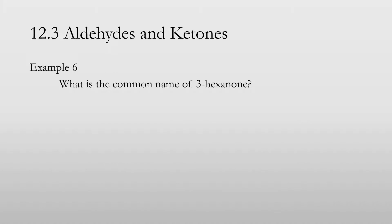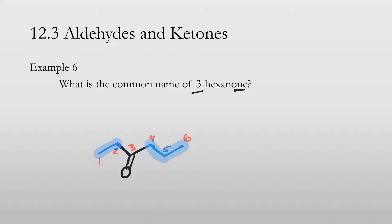Example 6 asks for the common name of 3-hexanone. Drawing it out: carbons 1 through 6, with a ketone at carbon three. That gives us two carbons on one side — an ethyl group — and three carbons on the other side — a propyl group. So the common name is ethyl propyl ketone.